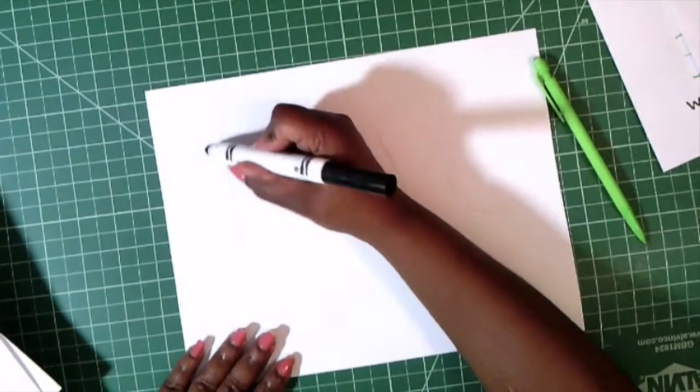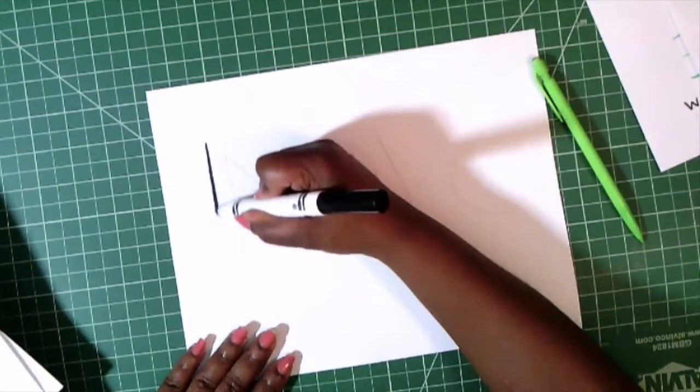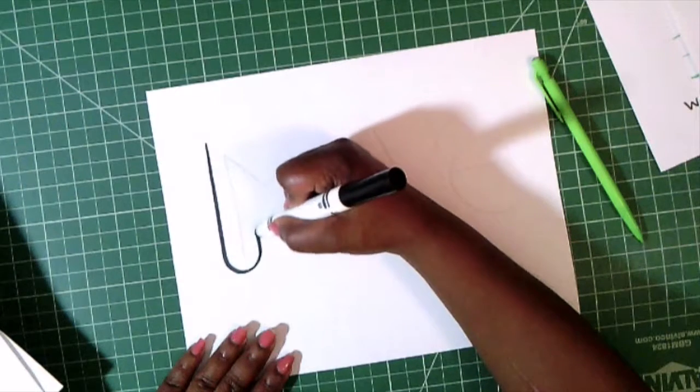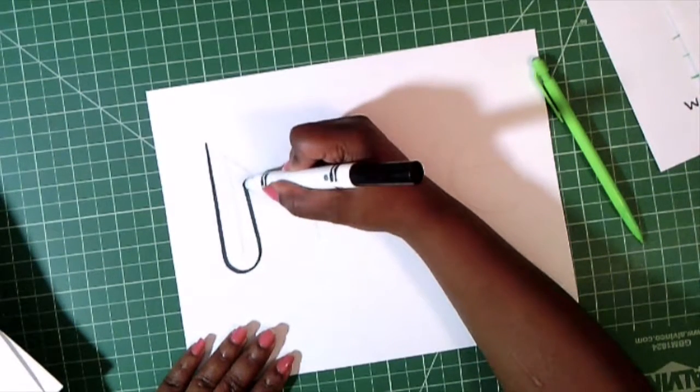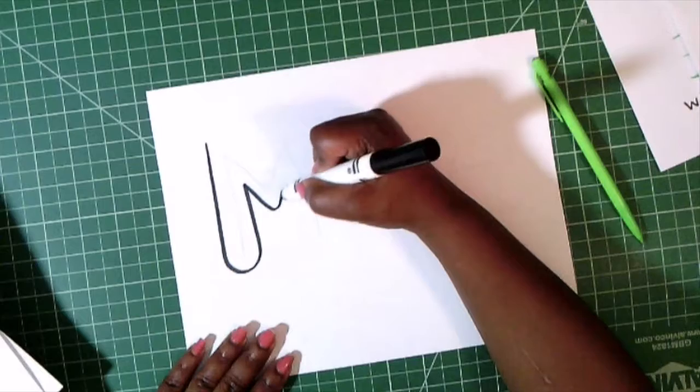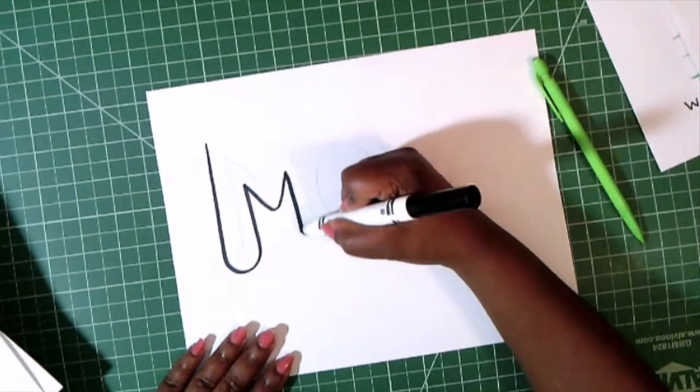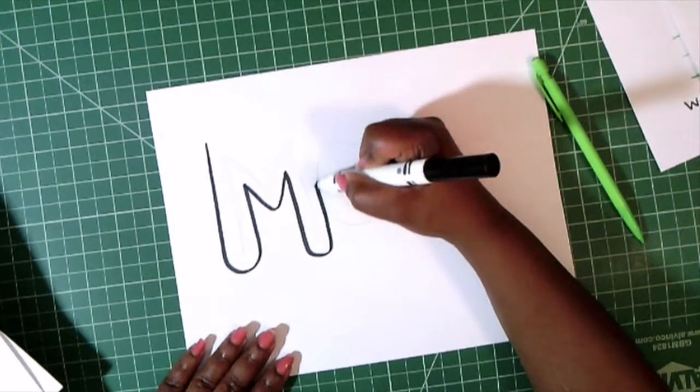So I'm following the directions of the lines that are in each letter: going down, around, up, diagonally down, diagonally up, down, around, up.